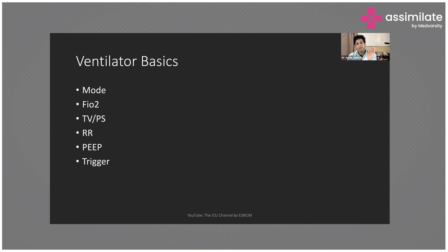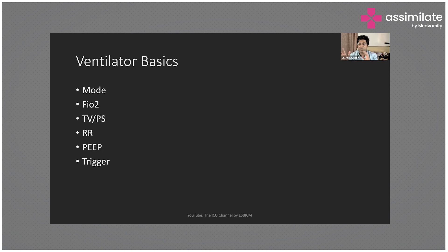In assist control mode, even if the patient triggers the breath, the quality and volume of the breath is fixed by the ventilator. When the patient is sedated or cannot take deep breaths, start with control mode ventilation. Pressure support mode and SIMV mode are weaning modes, but SIMV is not commonly used these days. Clinically, we use either control mode ventilation or spontaneous mode ventilation, and once the patient tolerates spontaneous mode, we disconnect the ventilator and put the patient on T-piece.